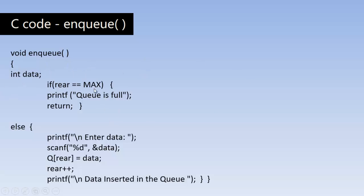If rear is not equal to max, we prompt the user to enter data, which is stored in the data variable. We then put the data into the array representing the queue at position queue[rear]. Rear acts like a pointer — it is a normal variable that we increment to behave like a pointer. Queue[rear] holds the data, then rear is incremented to the next location so we can insert a new element next time. Finally, we print the message 'data inserted into the queue.'